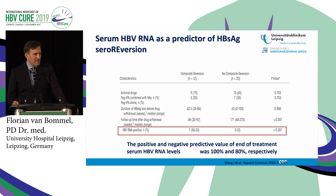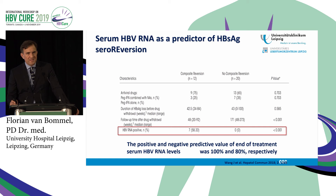Serum HBV RNA is a predictor of S antigen seroconversion, as shown in a small cohort of Asian patients. It is also a marker for reactivation — an interesting indicator in patients at risk who undergo immunosuppressive treatment and may reactivate.